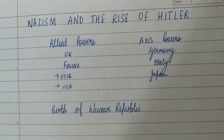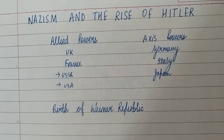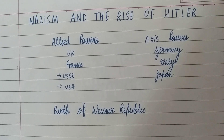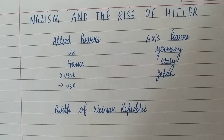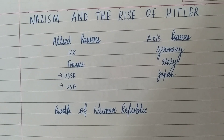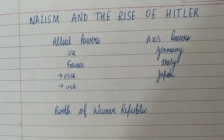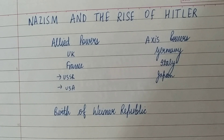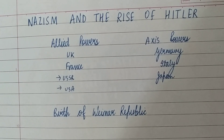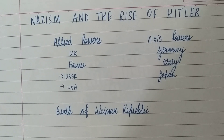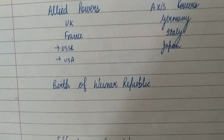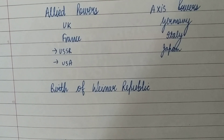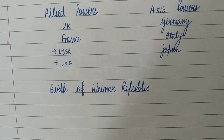The Allied powers fought against the Axis powers which were mainly Germany, Italy, and Japan. After the Second World War, Germany waged a genocidal war — genocidal war means killing of innocent people on a large scale. Mass murder was done and a lot of people died.